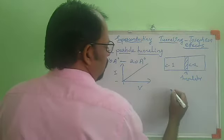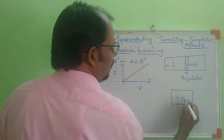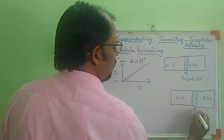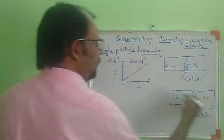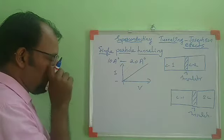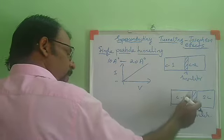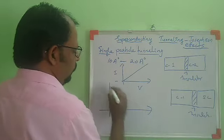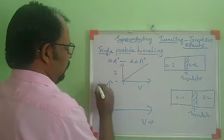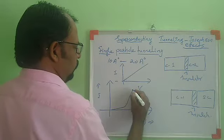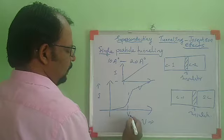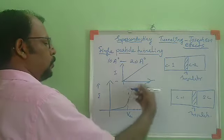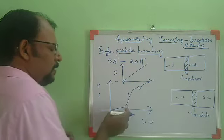Now consider one material as a conductor and another material as a superconductor, separated by an insulating medium. In 1960 it was shown that if we take one of the materials as a superconductor, then there will also be a transmission of electrons from one medium to another. In that case, the V-I characteristic curve shows that when the voltage exceeds a particular critical value, then V is proportional to I. Below that value, the current is very small — not appreciable.